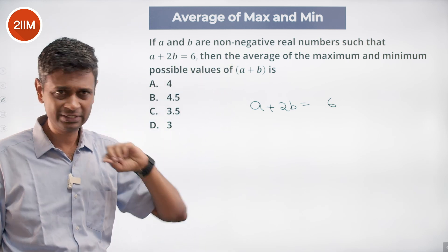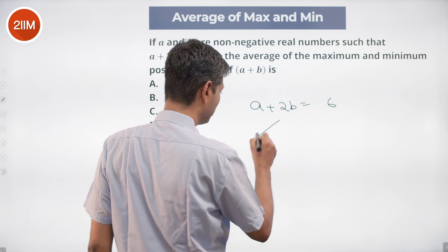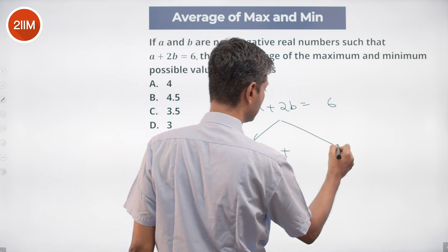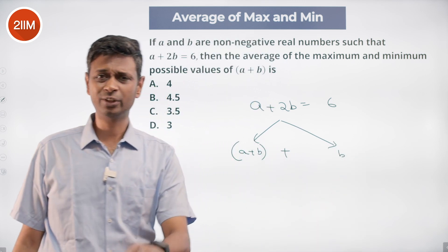They are non-negative real numbers. This a plus 2b, I'm going to break this as a plus b plus b. That's it. We're through.